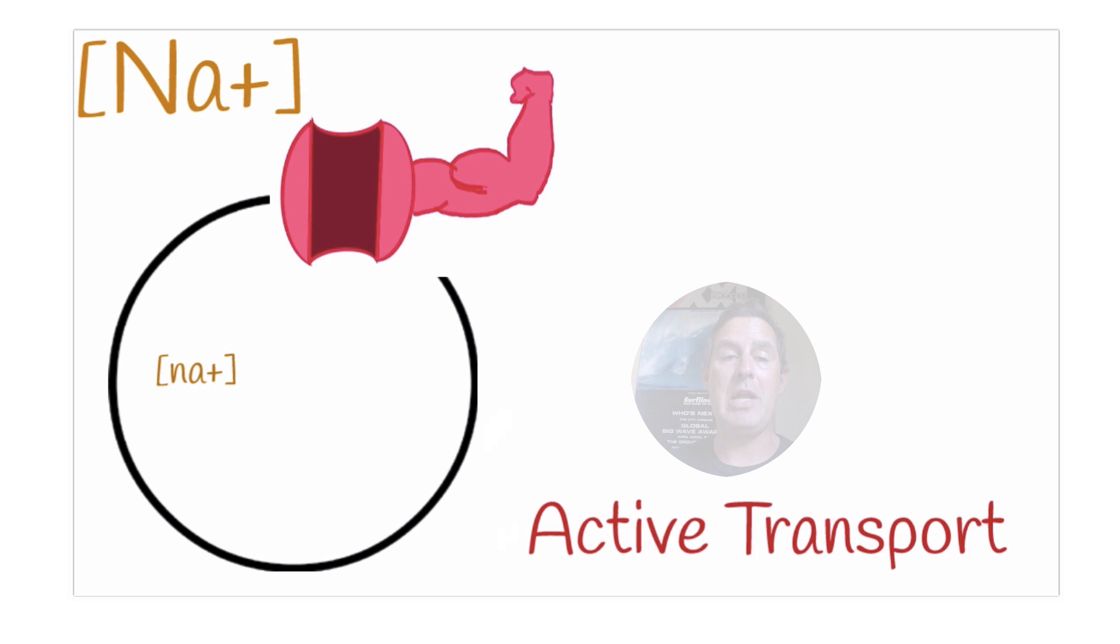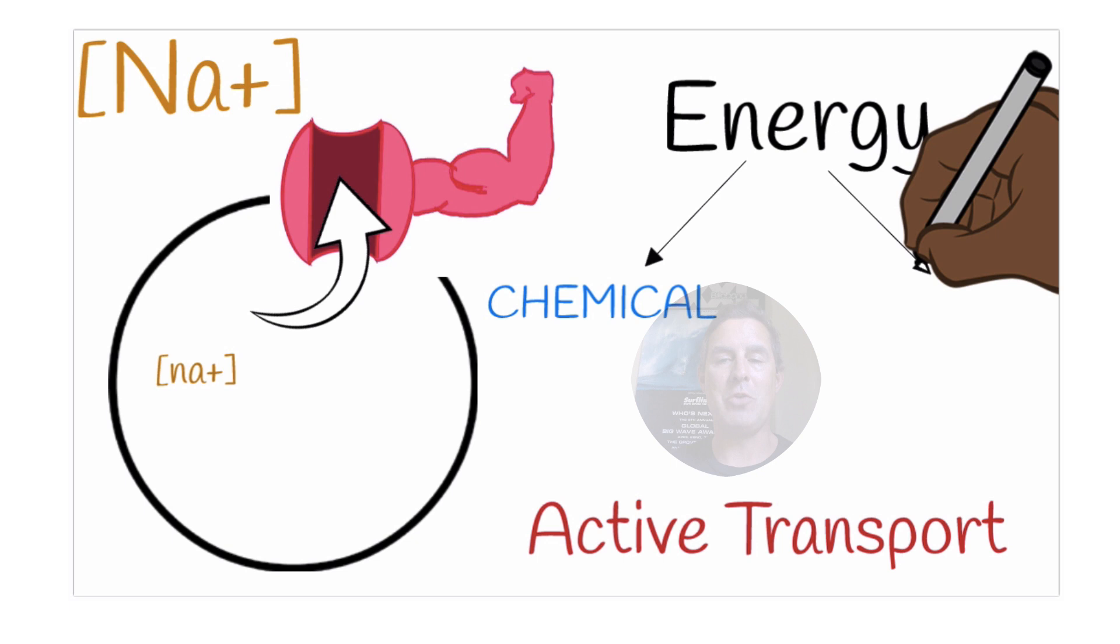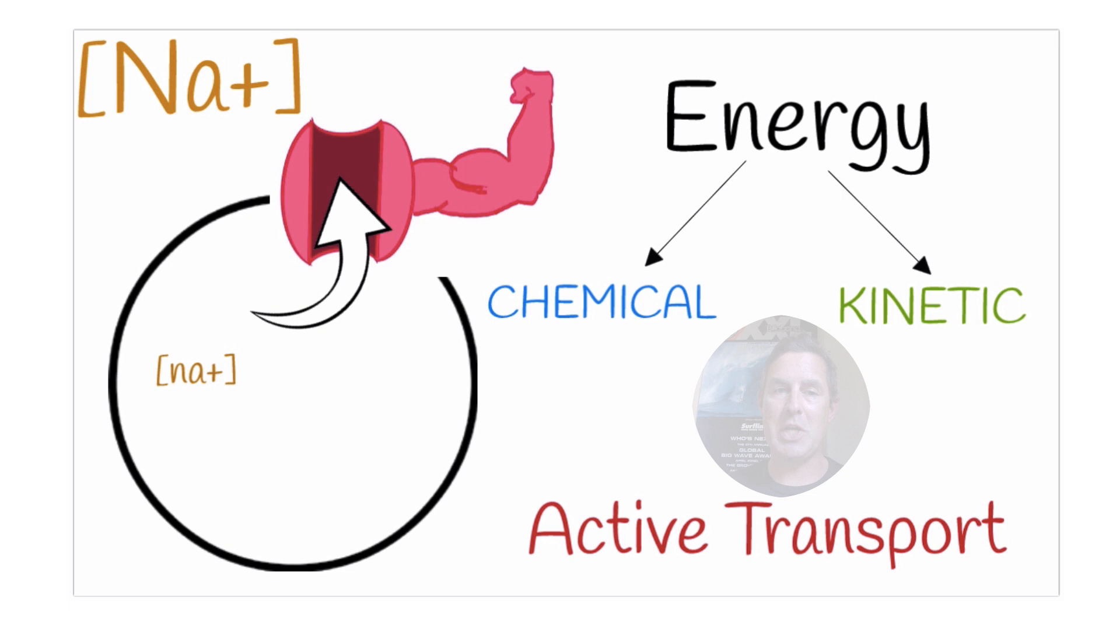Active transport, on the other hand, requires energy. It does work to move things against their gradients. So if we look here at sodium, as we suggested earlier, there's always a higher concentration of sodium outside of cells than inside of cells. So if we ever want to move sodium out of a cell, that requires work in the form of energy. And there certainly are times where our cells do move sodium outside the cell against their gradients. So to move sodium out of the cell, that requires work.